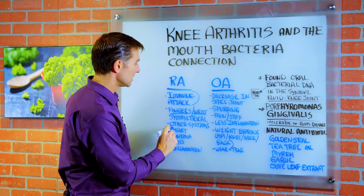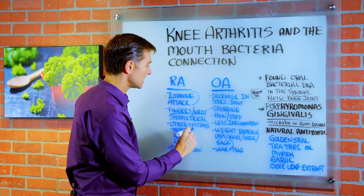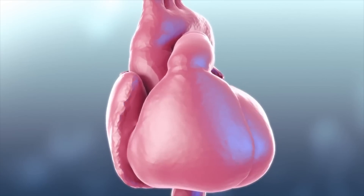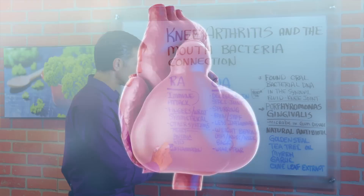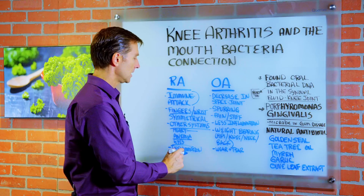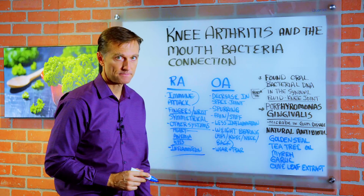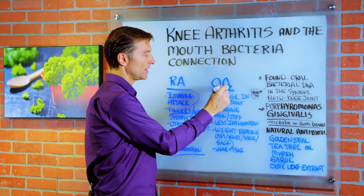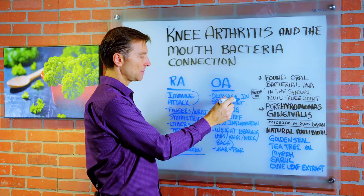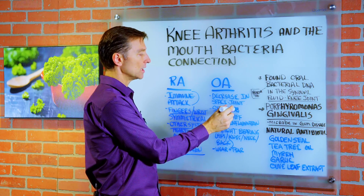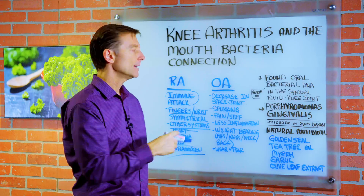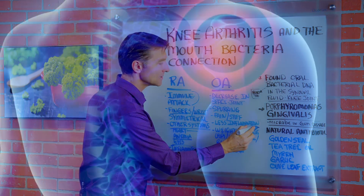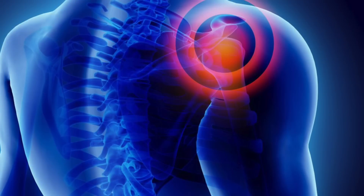The thing about RA is it affects other systems like the heart. It can cause anemia in the blood. It can affect the eyes, and there's always a lot of inflammation. Whereas osteoarthritis, you have a decrease in joint space. You get spurring, pain, stiffness, and a bit less inflammation, even though there's some.